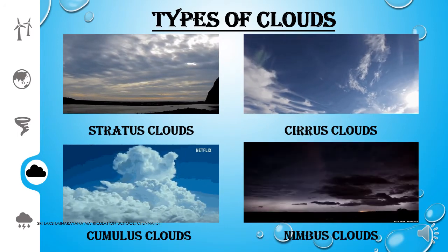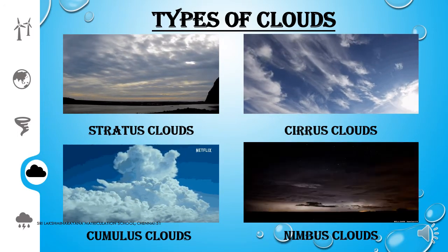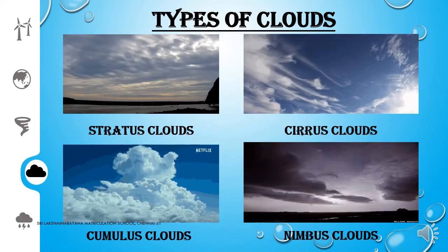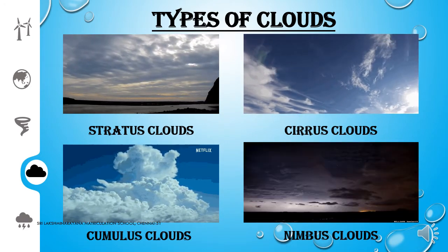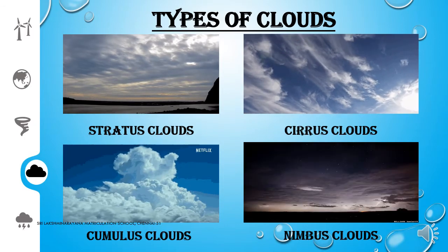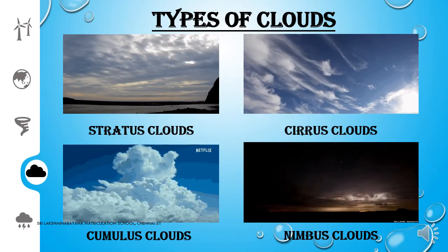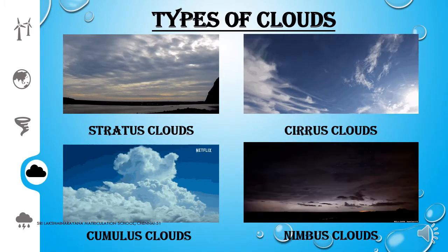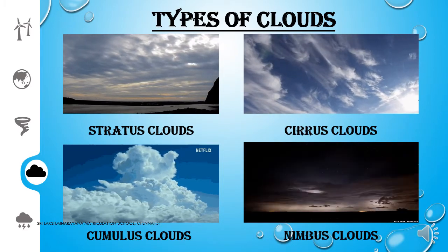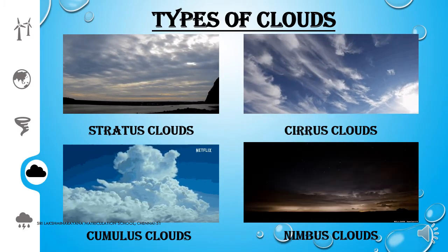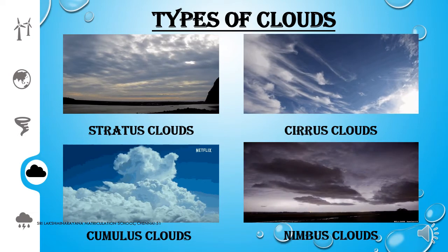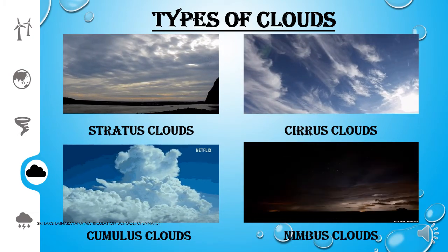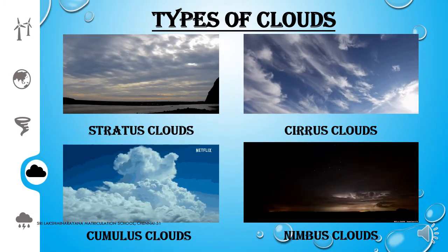Stratus cloud is gray in color and it may give a small shower. Third, cumulus cloud. Cumulus cloud looks like a puffy white cotton and gives convectional rainfall associated with lightning and thunder. Last one is nimbus cloud. Nimbus cloud appears dark or gray in color and it gives heavy rainfall.